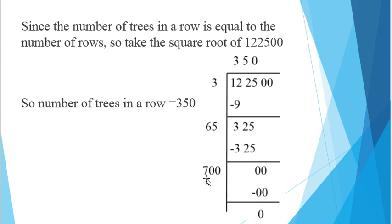Now, 700 will be multiplied by 0 to get the 0, because when any number is multiplied by 0, the answer is 0. So, the number of trees in a row will be equal to 350, and the number of rows will also equal to 350. Hope you will understand this question nicely.